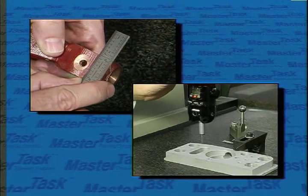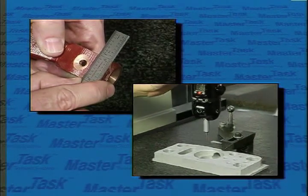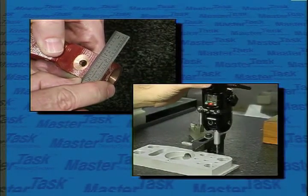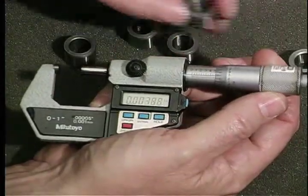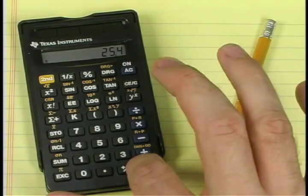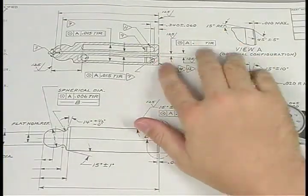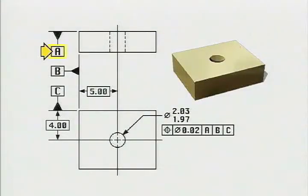Over thirty-five measuring instruments are covered, including everything from the steel rule to coordinate measuring machines. Both analog and digital versions of most common gauges are shown. Shop math, the interpretation of prints, and reading and understanding of geometric dimensioning and tolerancing symbols are all included.